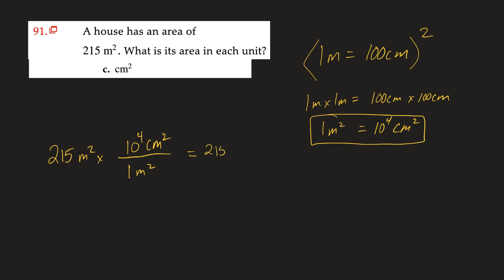So we have 215 times 10 to the fourth centimeters squared, and if we put that into proper scientific notation, that will be 2.15 times 10 to the sixth centimeters squared.